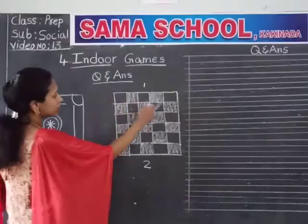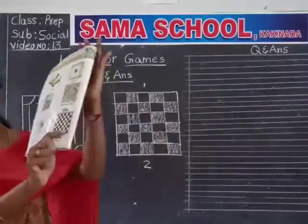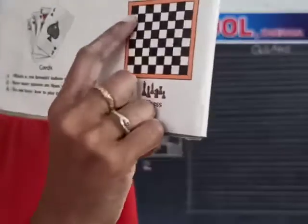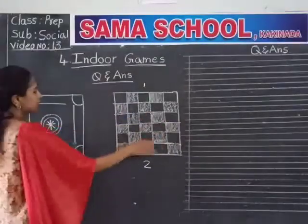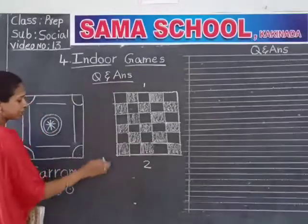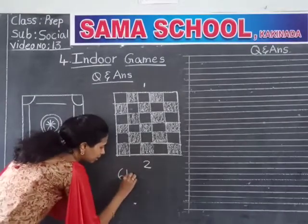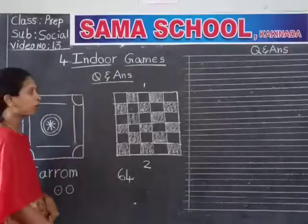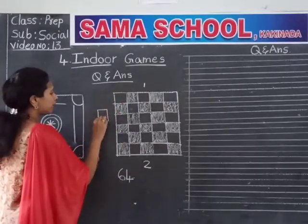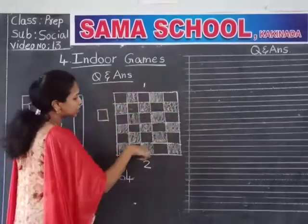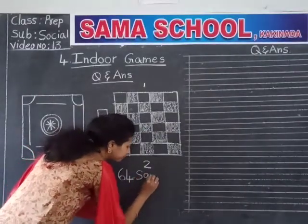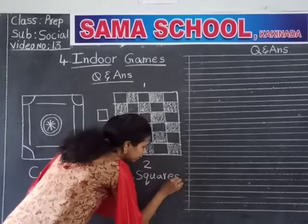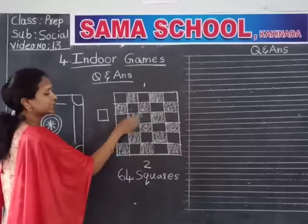In this one, some boxes are there — white and black color. The blackboard is not visible, but in the book it is visible. Black, white, black, white squares are there. So many squares. How many squares? You can count — 64 boxes are there. This box is called a square. Total 64 squares are there in this chess game.